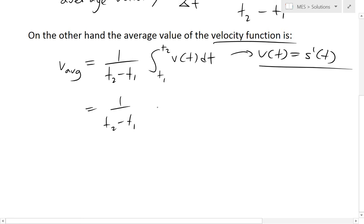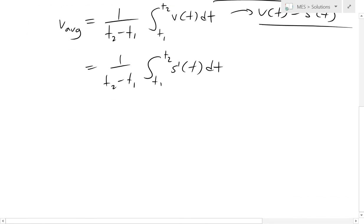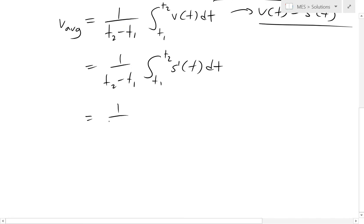So 1 over t2 minus t1, integral from t1 to t2 of s'(t) dt. So now we can actually take the integral of this part, so that's going to equal 1 over t2 minus t1...